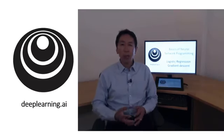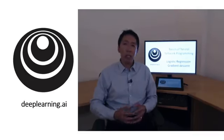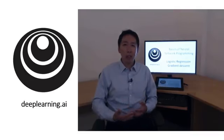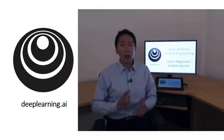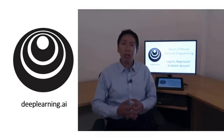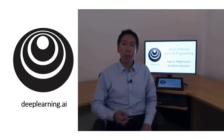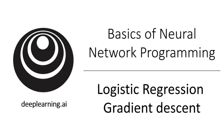In this video, I want to do this computation using the computation graph. I have to admit using the computation graph is a little bit of an overkill for deriving gradient descent for logistic regression, but I want to start explaining things this way to get you familiar with these ideas so that it'll make more sense when we talk about full-fledged neural networks. With that, let's dive into gradient descent for logistic regression.